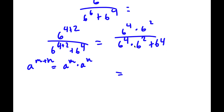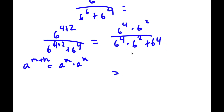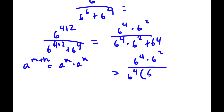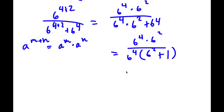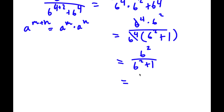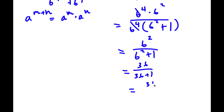Now I'm going to factor out 6 to the power of 4 in the denominator. So I have 6 to the power of 4 times 6 squared, divided by 6 to the power of 4 times 6 squared divided by 6 to the power of 4, which is simply 6 squared, plus 6 to the power of 4 divided by 6 to the power of 4, which is 1. And now because we have two 6 to the power of 4s, these two cancel out. So now we have 6 squared divided by 6 squared plus 1. 6 squared is equal to 36, so I have 36 over 36 plus 1. 36 plus 1 is 37, so I have 36 over 37. And that is our answer.